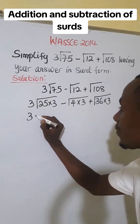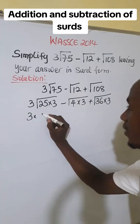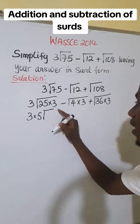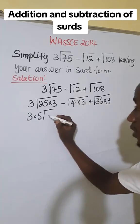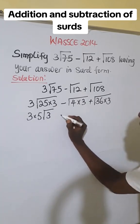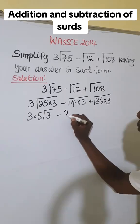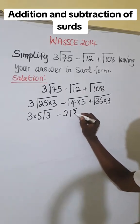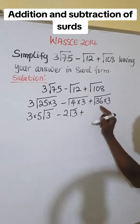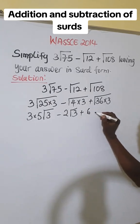Now we simplify further. This becomes 3 times the root of 25 is 5, because 5 times 5 is 25. Mind you, we did not take the root of 3, so 3 is still inside the root. Minus the root of 4, which is 2√3, plus the root of 36, which is 6√3.